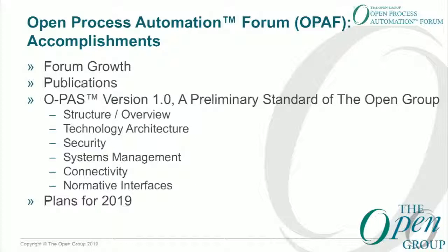So what are the accomplishments in the past year for the Open Process Automation Forum? We've had substantial forum growth — we'll look at that in a moment. There have been four to five different publications put out, and we've successfully released here in January the version one of the preliminary standard of the Open Group, which is really focused on driving interoperability in this space. We'll walk through the structure and overview: its architecture, the security fundamentals, the systems management capabilities, the connectivity fundamentals, and the normative interfaces that are mandated from a conformance viewpoint, and then we'll talk about our plans for 2019.